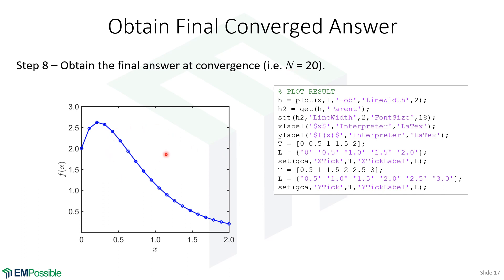We run the final simulation at the converged number of points — around 20 — and generate a nice professional plot. Never just plot the crude output that automatically comes out of MATLAB. We use consistent number of digits on the axes, correct math symbols using the LaTeX interpreter, and thick enough lines. Here's the code used to generate that professional plot.